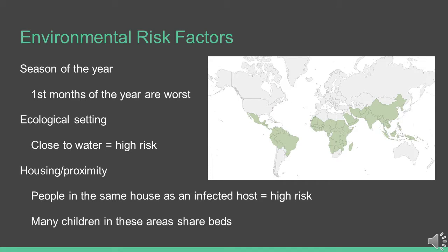Studies show that there are three main environmental risk factors associated with malaria. The first is the season of the year, with the highest rates of infection being in the first few months. Second is the ecological setting — if a village is close to a water source, specifically warm, still water that is best for mosquitoes to reproduce in, they have a higher risk of infection.